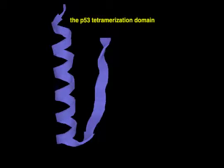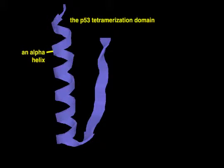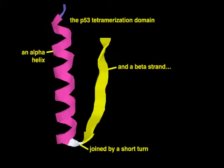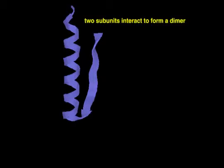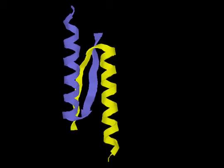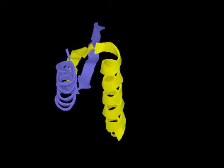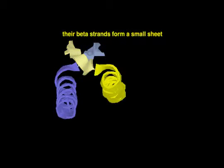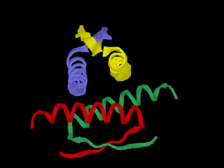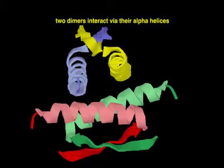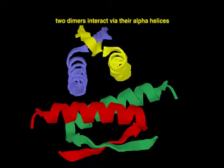The tumor suppressor protein P53 is a tetramer of four identical subunits. Each P53 subunit contains a simple tetramerization domain composed of a single beta strand connected to an alpha helix. The tetrameric form of P53 assembles as a dimer of dimers. Two copies of P53 interact via beta strands, forming a two-stranded beta sheet. Two such dimers then interact via their alpha helices to form the tetrameric assembly.